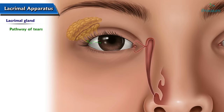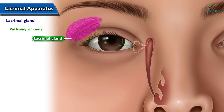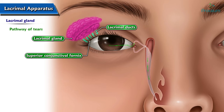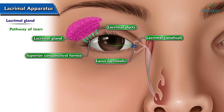Pathway of tears: Tears are produced in the lacrimal gland below the lateral eyebrow, then go to the lacrimal ducts, reach the superior conjunctival fornix, reach the anterior eyeball, then move to the lacus lacrimalis, and then go to the lacrimal canaliculi at the inner canthus, before entering the lacrimal sac.